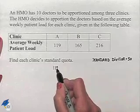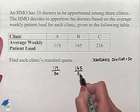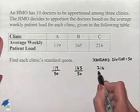So that would be 119 divided by 50, 165 divided by 50, and 216 divided by 50.